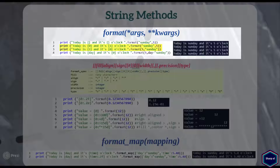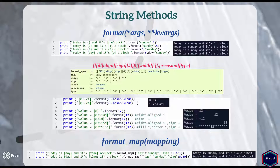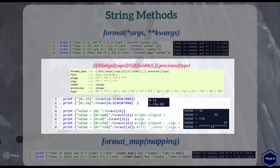You can also give the index position of an argument in the replacement field, as shown in this example. You can also give the key value in the replacement field if the argument is a keyword argument. So those were very simple examples of the format method. The format method can do a lot of other things other than just replacing values. A replacement field can also contain a format specifier which dictates how each value will be formatted within the resulting string, such as the number of decimal places.